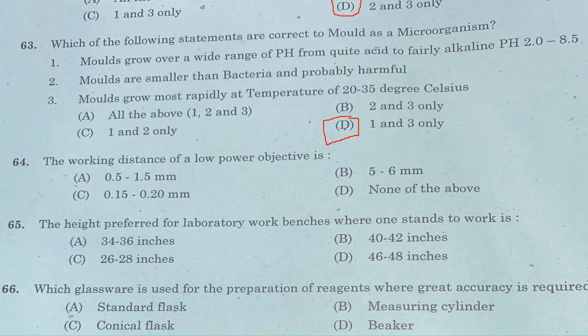Question 64: The working distance of a low power objective is — Option A: 0.5 to 1.5 mm. Option B: 5 to 6 mm. Option C: 0.15 to 0.20 mm. Option D: none of the above. Answer is Option B, 5 to 6 mm.